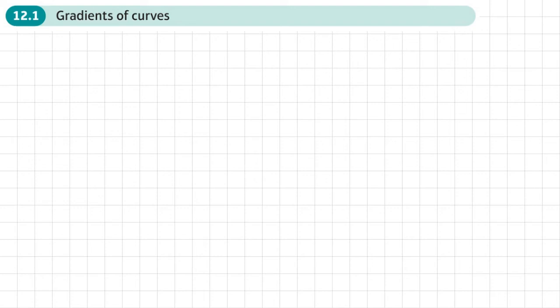This is the first section of Chapter 12 on differentiation. This chapter is about gradients of curves. We should already know what the definition of the gradient is - it's the slope or steepness.